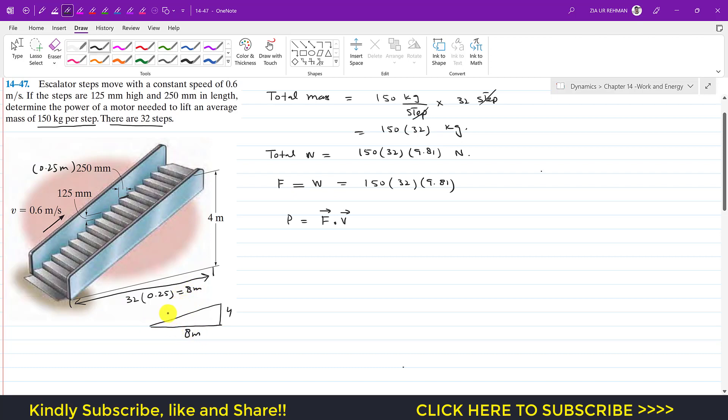In order to lift that weight, the motor needs to apply the force in the upward direction since the weight is acting in the downward direction. So the force must be acting in the upward direction and we need to find the velocity component in the upward direction.